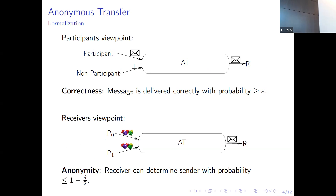We model this as anonymous transfer: a simplification with three parties — a participant, a non-participant, and a receiver. The participant wants to send a bit to the receiver, while the non-participant doesn't even know anything is happening. We say an anonymous transfer is ε-correct if the bit is transferred with probability ε — meaning what the receiver reconstructs matches what the participant sent with probability ε. We also want anonymity: from the viewpoint of the receiver, both parties are indistinguishable from just acting normally, so the probability that the receiver can determine which of the two parties was the sender is at most (1−δ)/2.